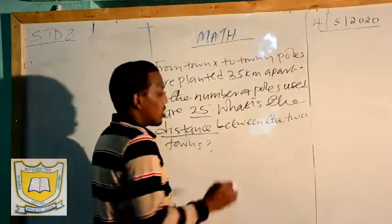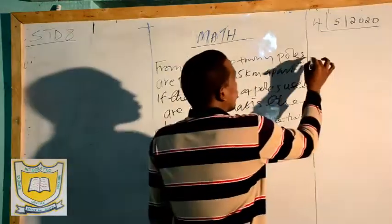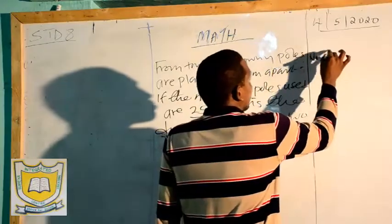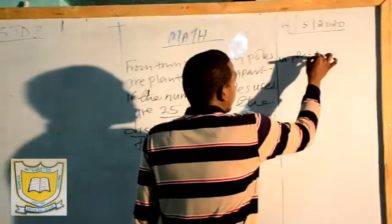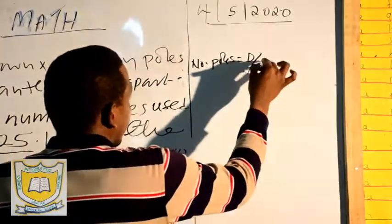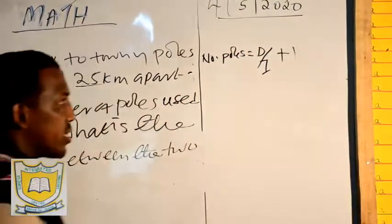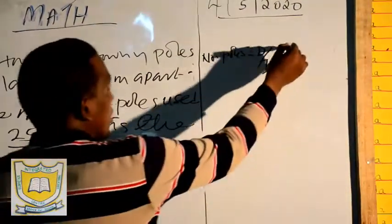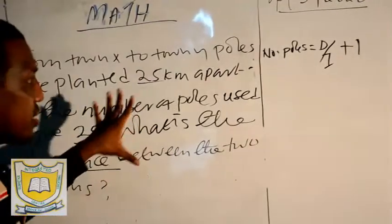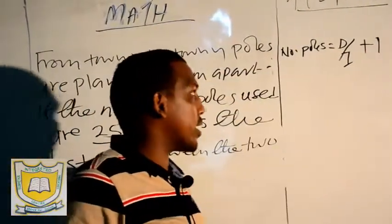What is the distance? Remember the formula: the number of balls is equal to distance over interval plus 1, when it's an open. This is an open because it's a ball, it's not a figure.